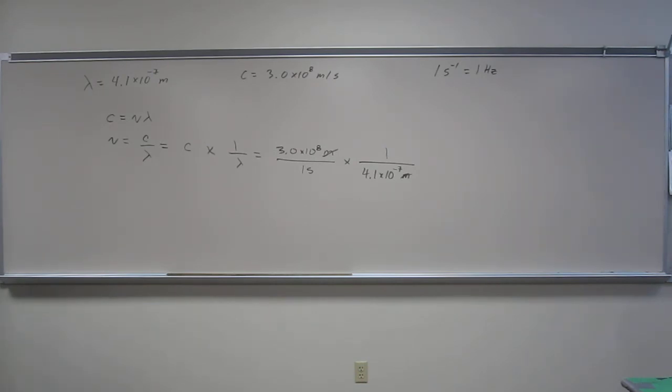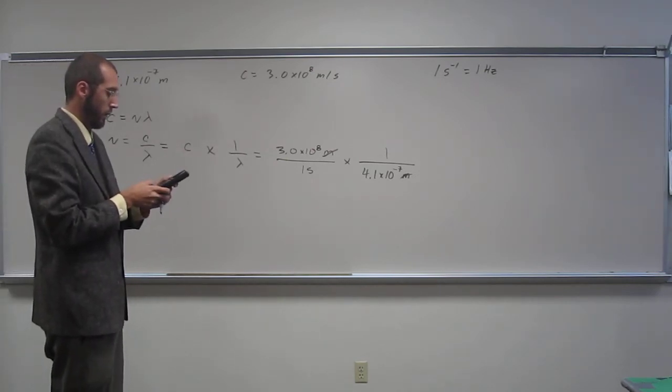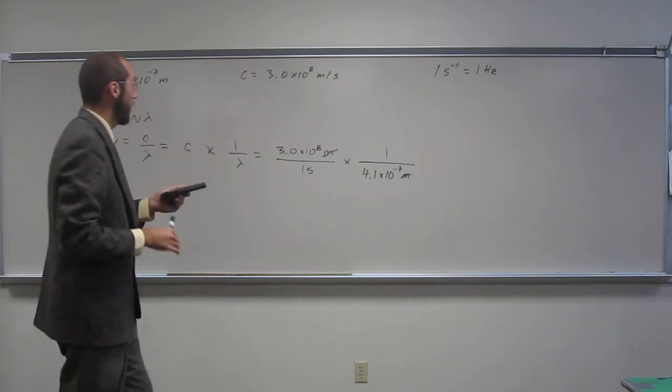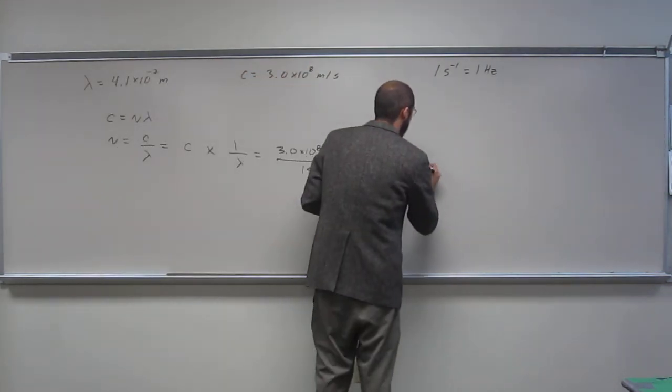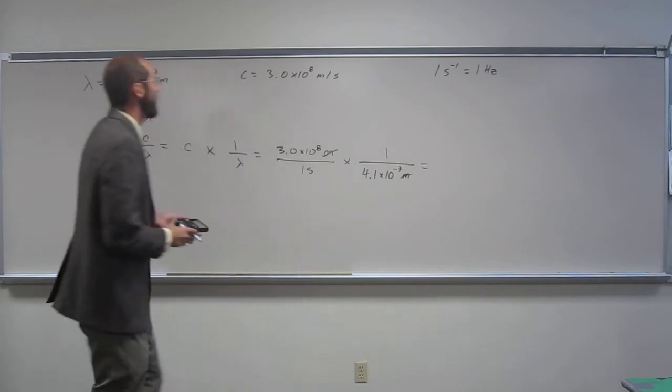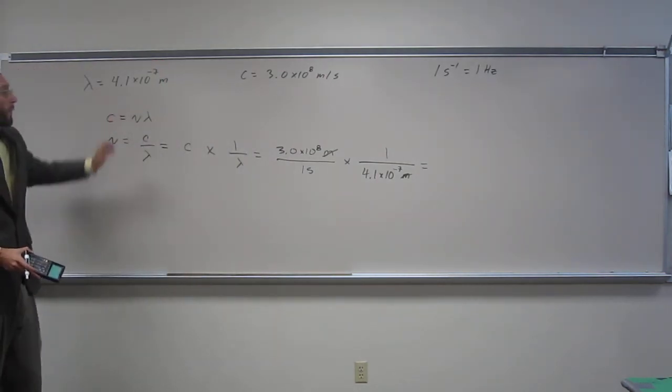So 3 divided by 4.1 E negative 7. Okay, and again, we're doing this in hertz. We've already got it there. So how many sig figs is this going to go to? Just two, right? Okay.